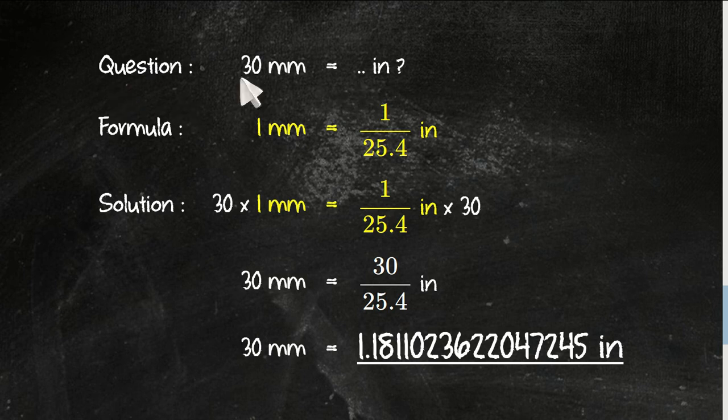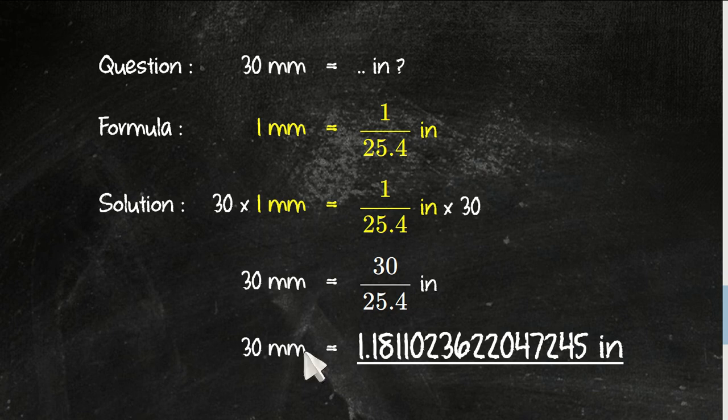First, just write the question again and write the formula again. Now this is how you solve the problem. You need to write down the formula, and then multiply this number with 30 and this number with 30 as well.